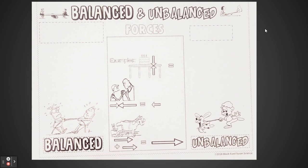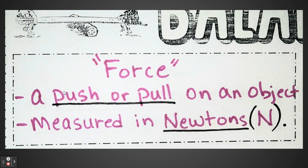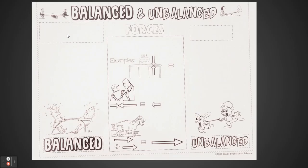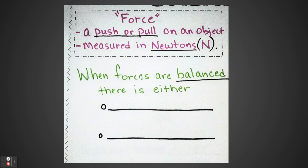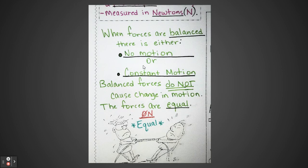The information is important because you're going to need it in eighth grade for your STAR test. We're starting with balanced forces on the far left-hand side of the handout. Force is a push or pull on an object. We measure force in newtons, represented by the capital letter N. Now right underneath that, when forces are balanced there is either no motion or there is constant motion.